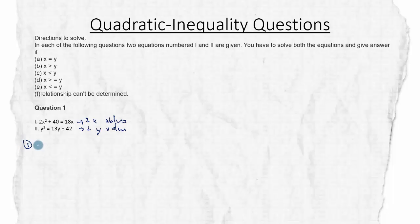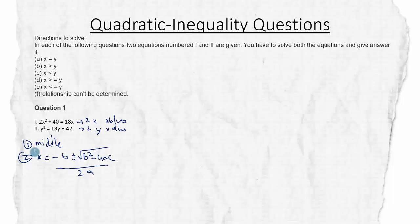There are two methods we can use to solve a quadratic equation. One is middle term split, and the other is the formula: X = (−B ± √(B²−4AC)) / 2A. I would suggest using this formula rather than middle term split, unless it's pretty straightforward, because questions asked in bank examinations these days involve bigger middle term values which are not easy to identify quickly.